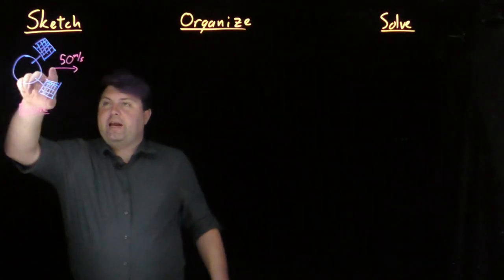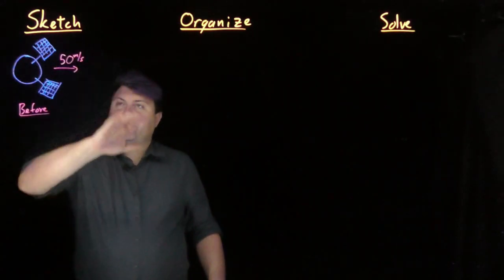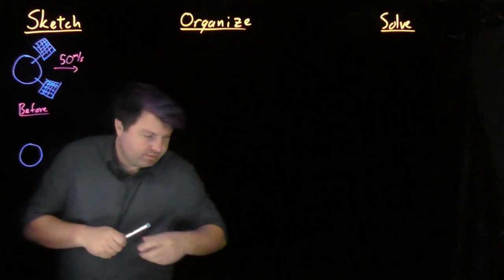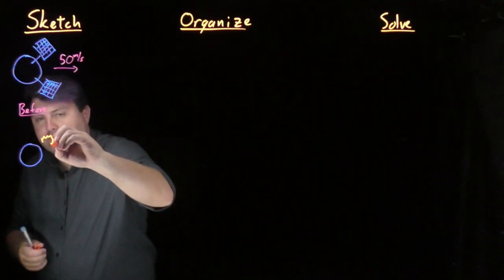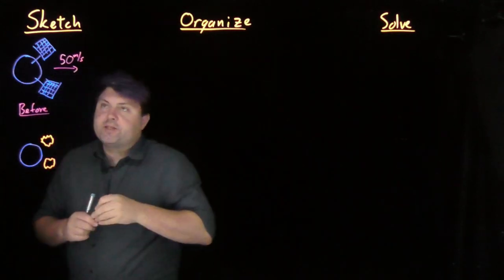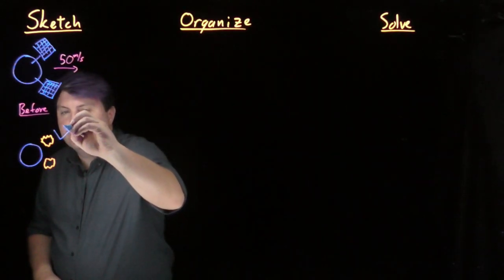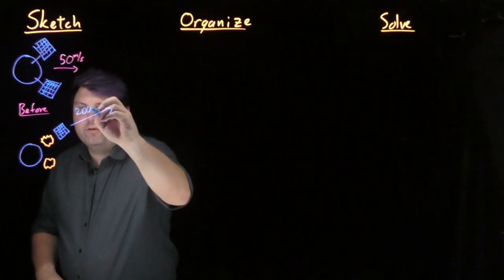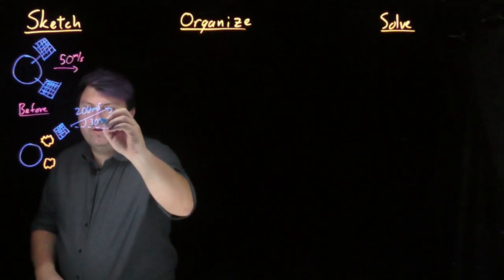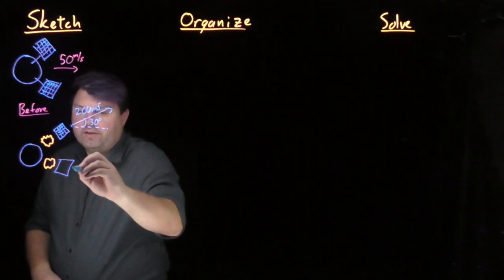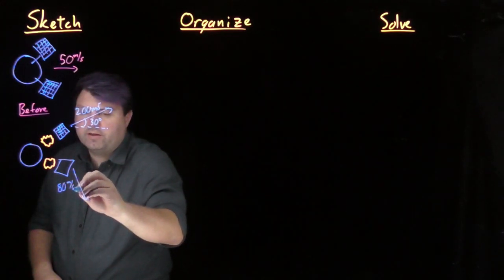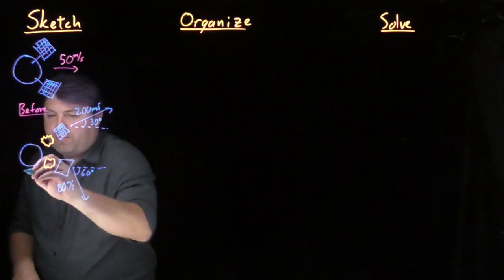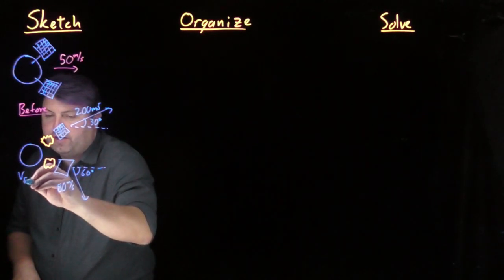Welcome! Let's take a look at a space probe in which the entirety of it is traveling at 50 meters per second, but in order to slow down it can have an explosion and explosively send these solar panels separating away from them. So this one is going to be traveling at 200 meters per second at 30 degrees above the horizon, and this one is going to be traveling at 80 meters per second at 60 degrees below the horizon. So after this explosion happens we want to know the final velocity of our probe.